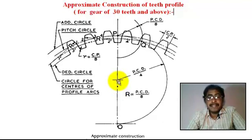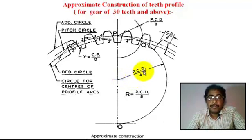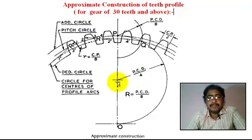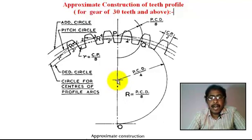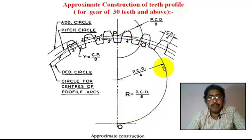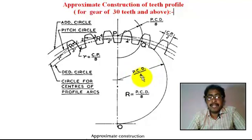We take a measurement with pencil compass. The radius is PCD (pitch circle diameter) divided by 4. With center at this intersection point, we draw a half circle. The radius is PCD by 4.